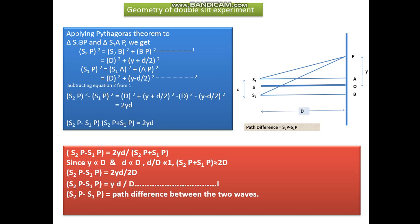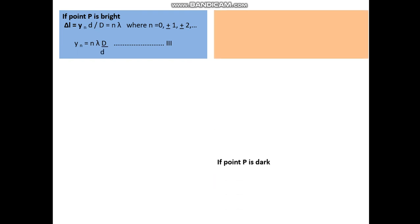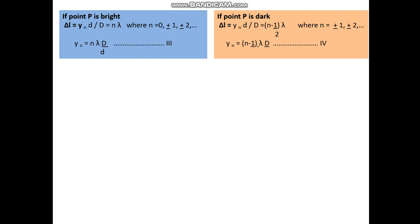For the nth fringe, the path difference delta L equals yn times d divided by D. If point P is bright, delta L equals n lambda, so yn equals n lambda D divided by d, where n equals 0, plus or minus 1, plus or minus 2, and so on. If point P is dark, delta L equals (n minus half) times lambda, so yn equals (n minus half) times lambda D divided by d, where n equals plus or minus 1, plus or minus 2, and so on.